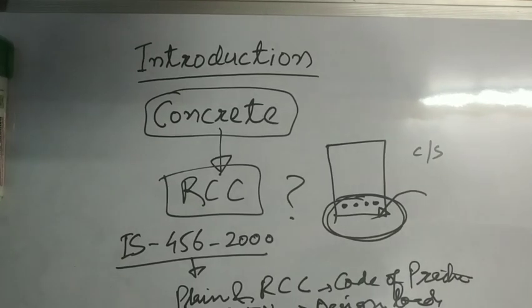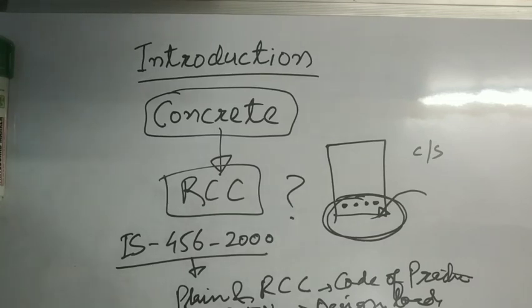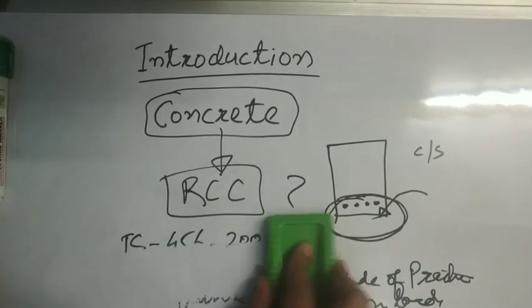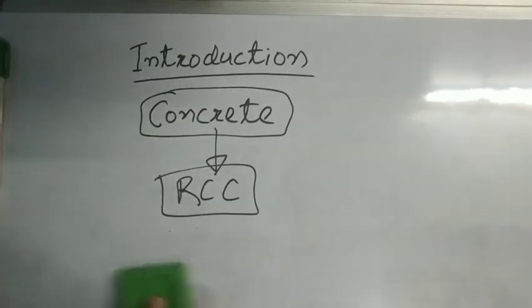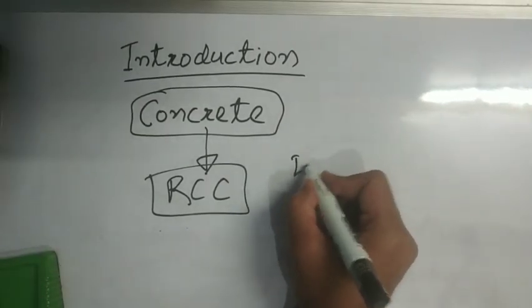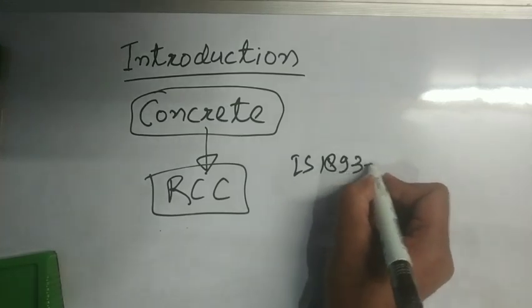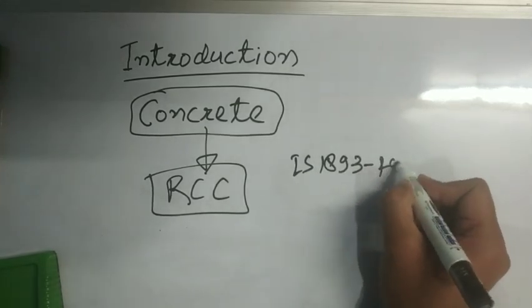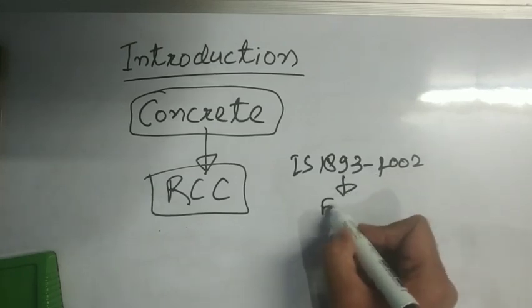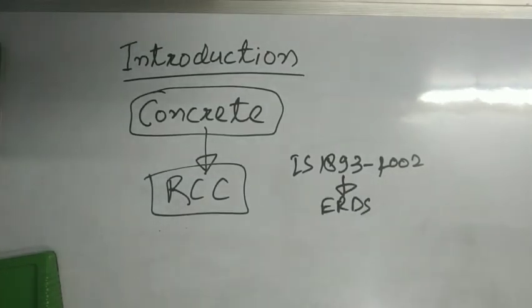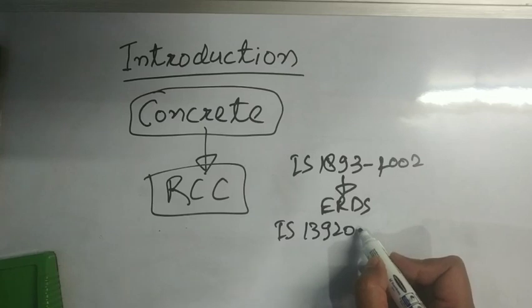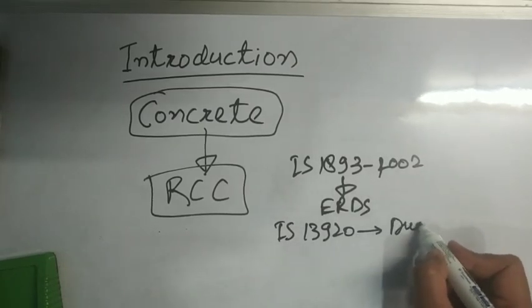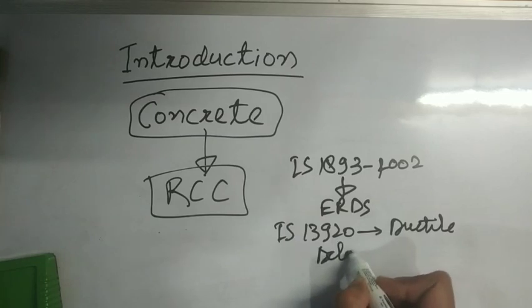And IS 1893-2002, this is regarding earthquake resistant design of structures. And we also have one more code IS 13920, this is regarding ductile detailing.